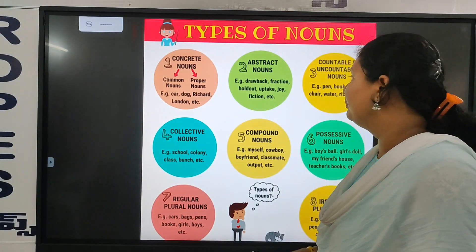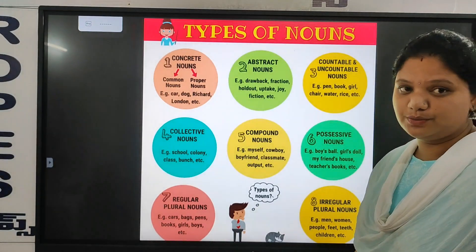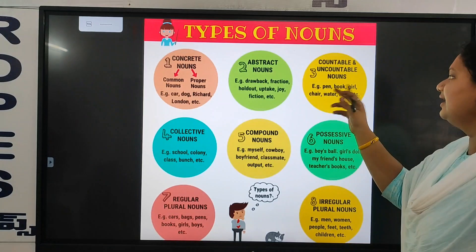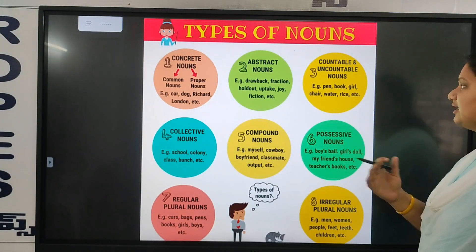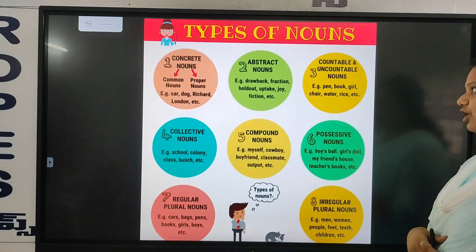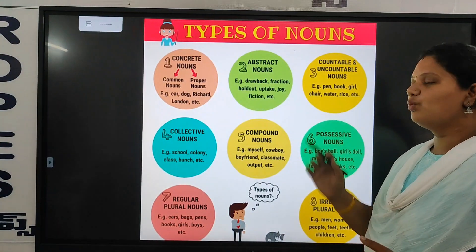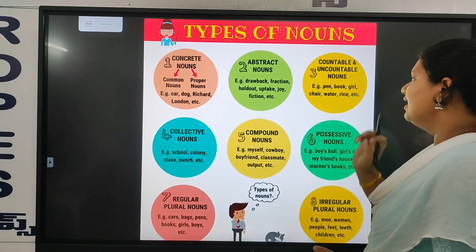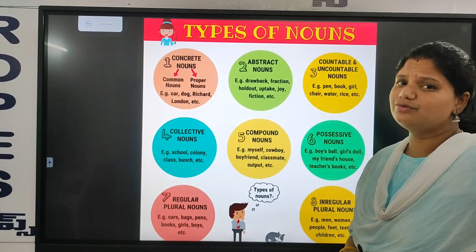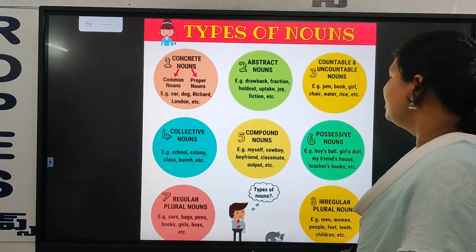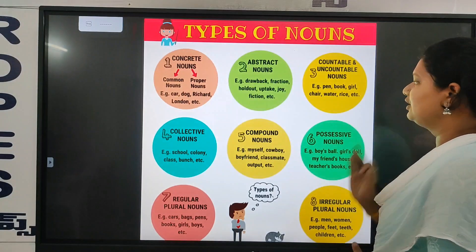Next are countable and uncountable nouns. Pen — we can count. Book — we can count. Girl — we can count. Chain — we can count. Water — we cannot count, because it is water. Rice — we cannot easily count. These things we consider as countable and uncountable nouns.